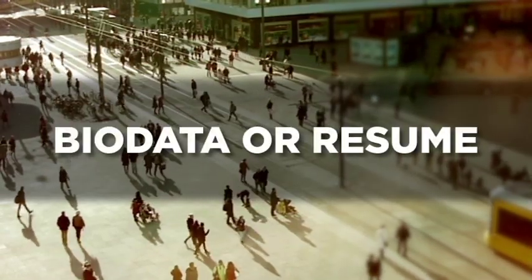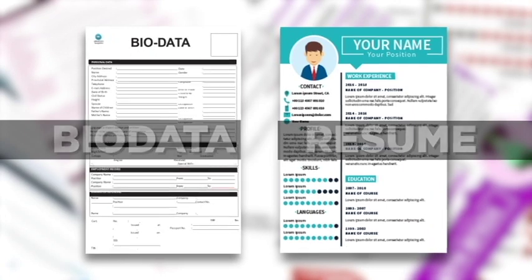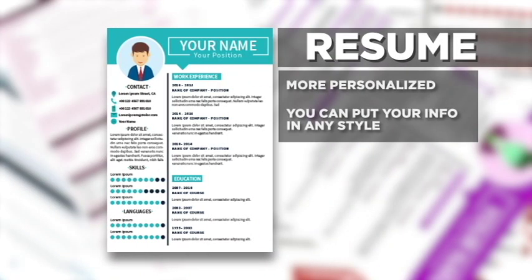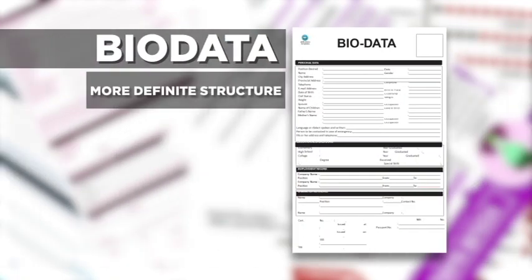1. Bio data or resume. The resume and the bio data are alike in the information that they contain; they only differ in terms of presentation. The resume is more personalized since you can put in the information you want in whatever style you prefer. Meanwhile, the bio data has a more definite structure compared to the resume. There are ready-made bio data forms that you can buy from stores.